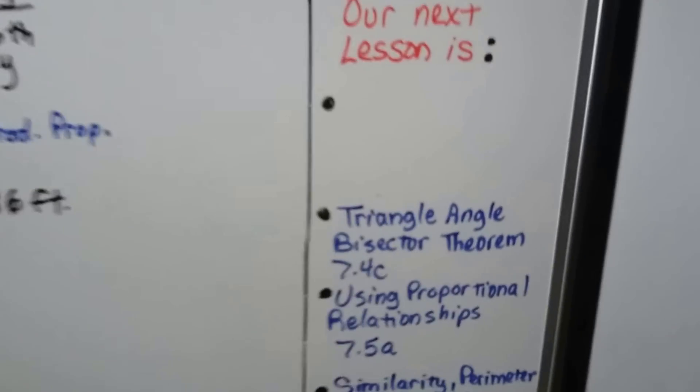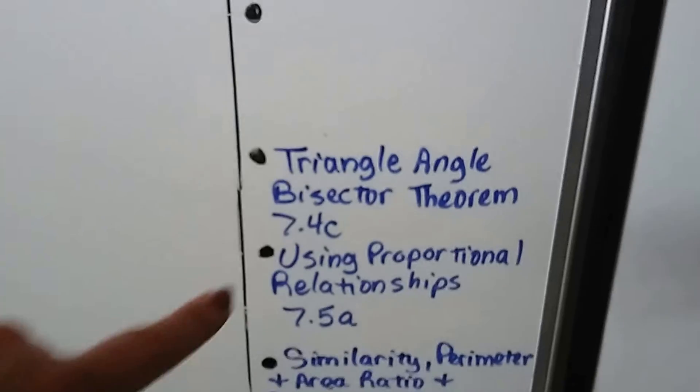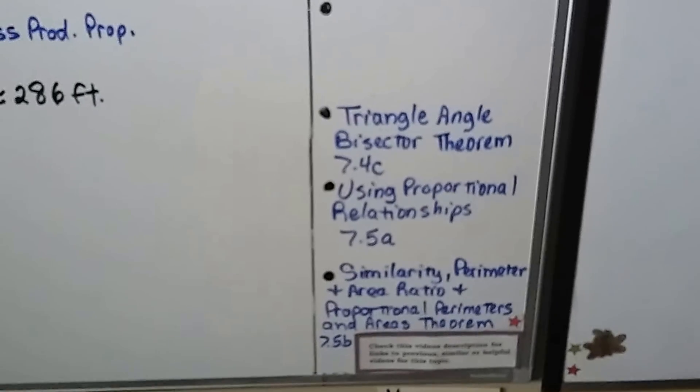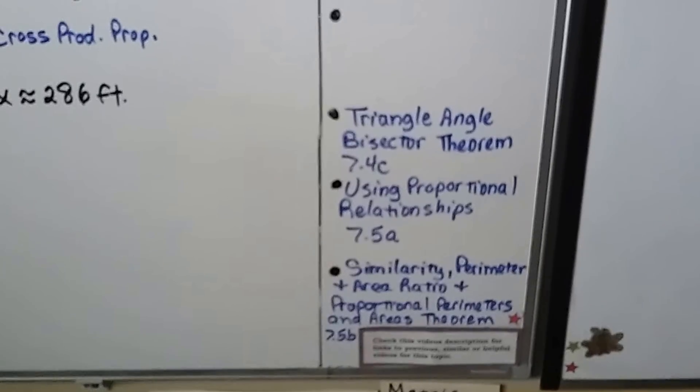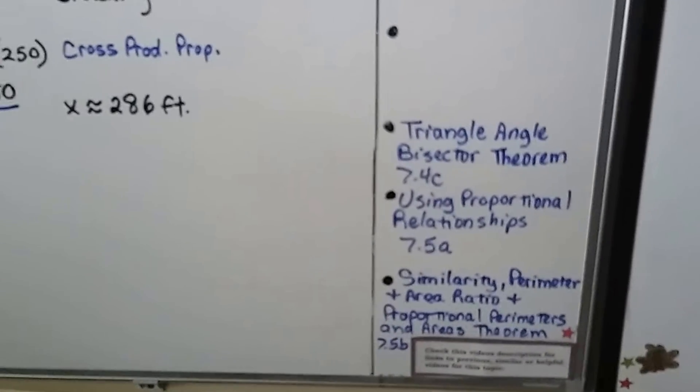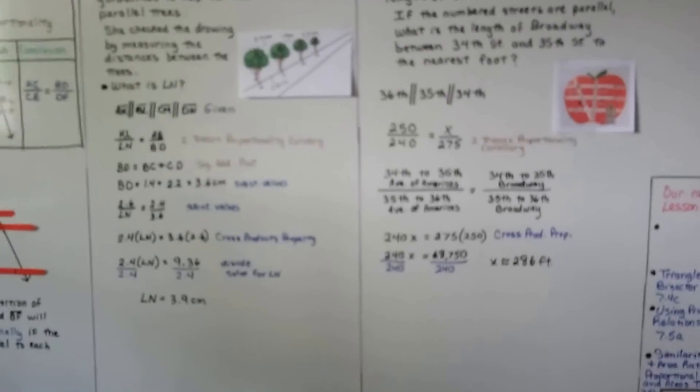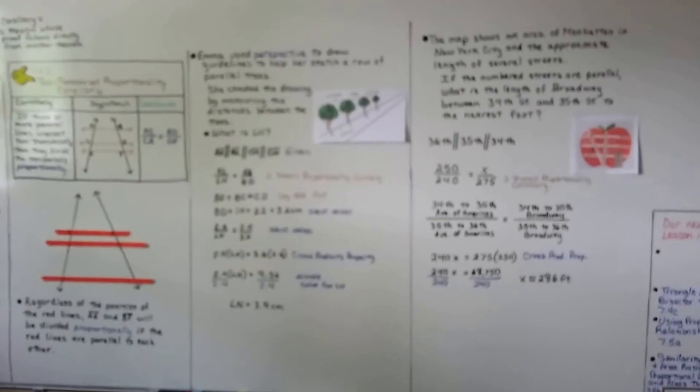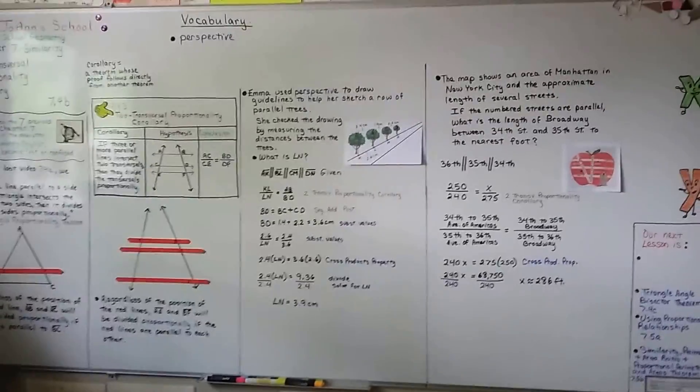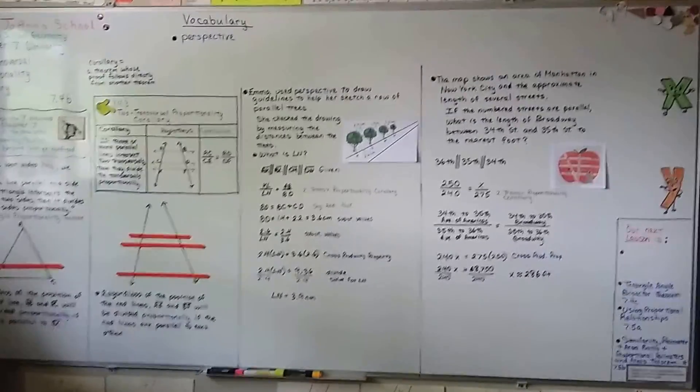Our next lesson is going to be the Triangle Bisector Theorem 7.4c, then we're going to move on to 7.5 and talk about using proportional relationships and similarity perimeter and area ratio and proportional perimeter and areas theorem. So we're moving along, and I hope you understood the lesson, and I hope you're okay, and I hope I'll see you next time. Have a great day. Bye.